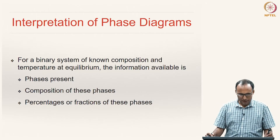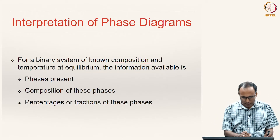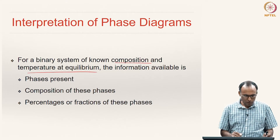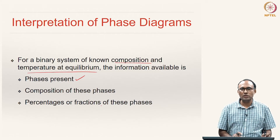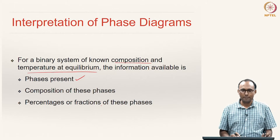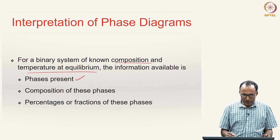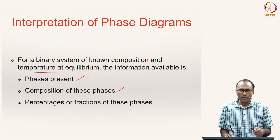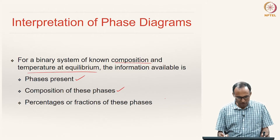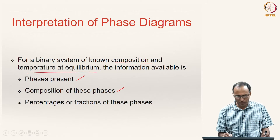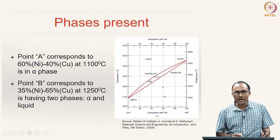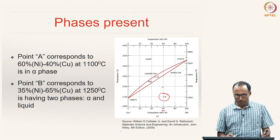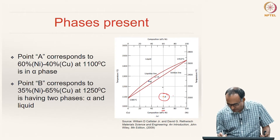The liquidus and solidus lines intersect at the extremes, which are the melting points of the pure components. To interpret phase diagrams: for a binary system of known composition and temperature at equilibrium, we can determine what phases are present. Point A corresponds to 60% nickel / 40% copper at 1100°C, which is in the alpha single-phase region. Point B corresponds to approximately 35% nickel / 65% copper at 1250°C, which lies in a two-phase region containing both alpha and liquid solution.